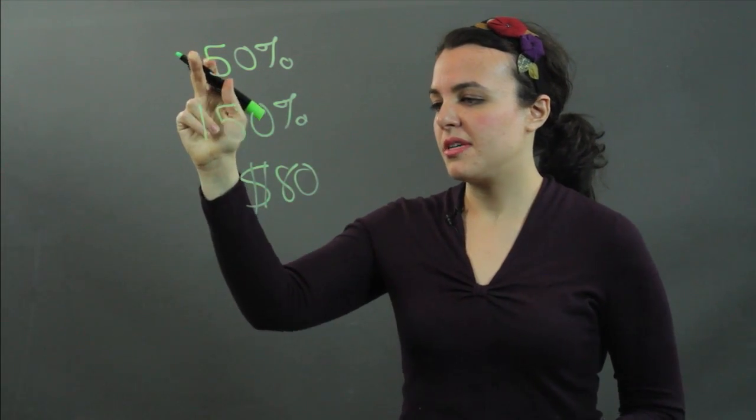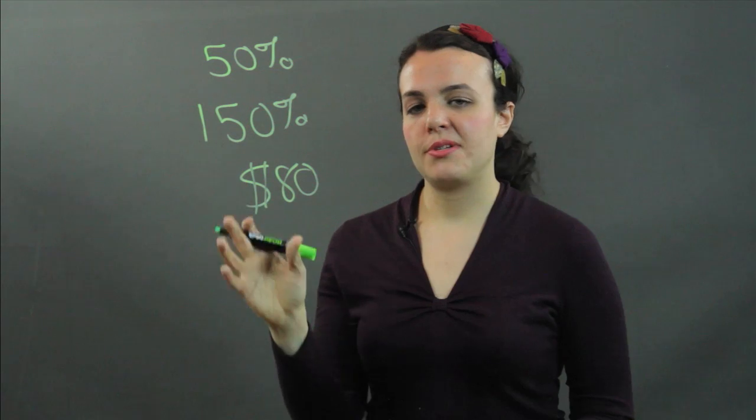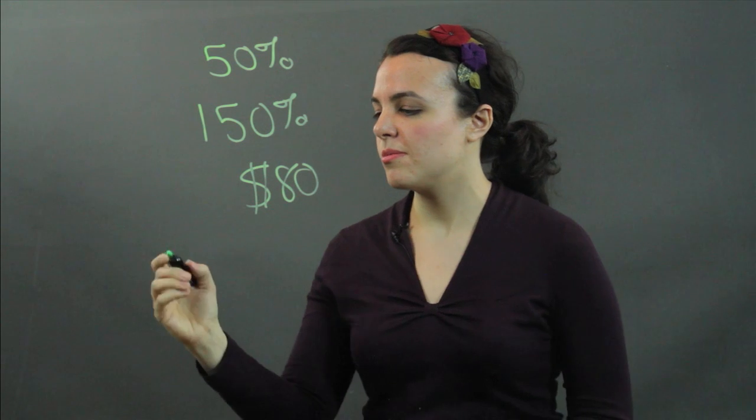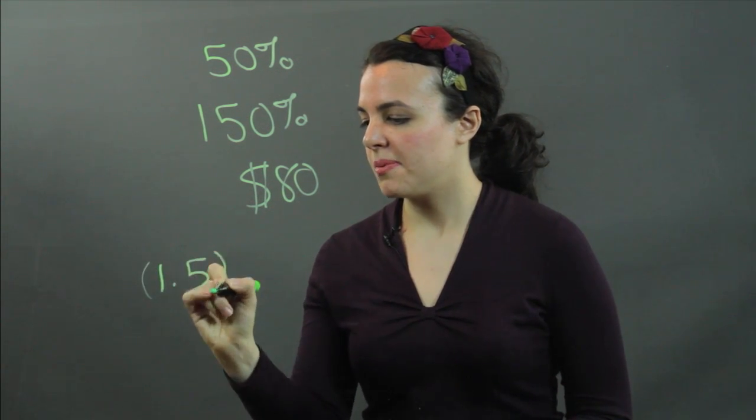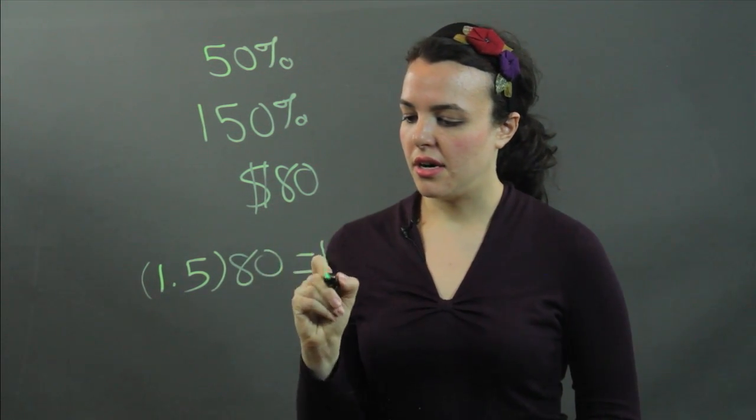$80 going up 50%. All I have to do is find 150% of 80. So I turn my 150% into its decimal form, which is 1.5. I multiply that by 80, and I get 120.